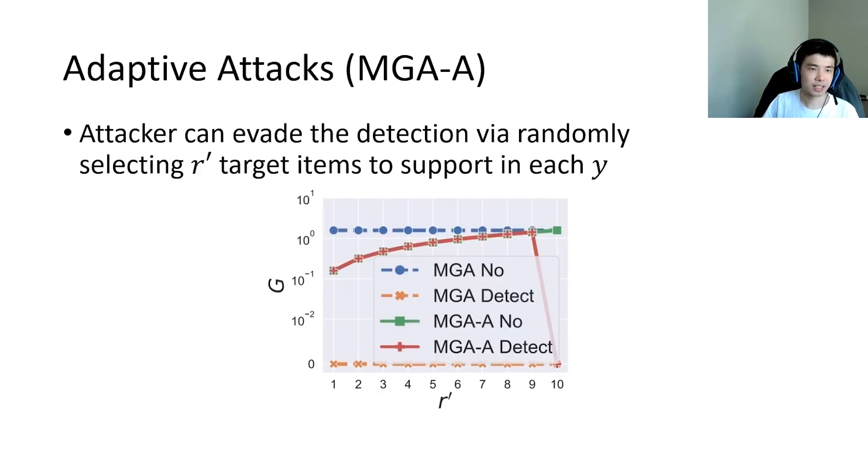An attacker can adapt the MGA attack to evade the detection. Specifically, instead of having every fake user supporting all r target items, the attacker can randomly select r' target items to support for each fake user.